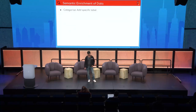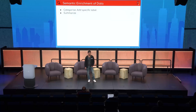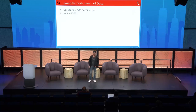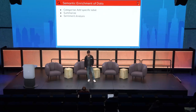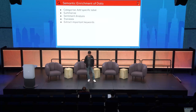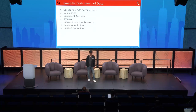As I already mentioned, the semantic enrichment that machine learning models provide includes categorization — categorizing an image into specific categories — summarization of large documents, translation, extracting important keywords, image annotation, image captioning, and speech-to-text tasks. The list goes on and on.